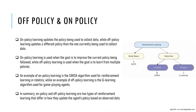We have one more topic to cover before starting the algorithm part — that is off policy and on policy. These are two types of reinforcement learning methods that differ in how they update the agent's policy based on observed data. On policy learning involves using the current policy to collect new data and updating the policy based on that data, so the agent learns by directly optimizing the policy it is currently following. One example of on policy learning is the SARSA algorithm.